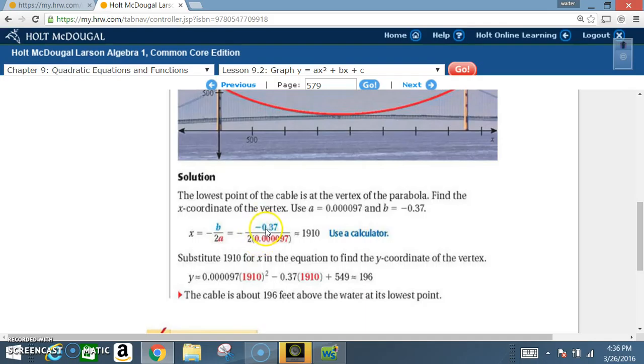Then we apply that. When you divide these two out, you end up with a negative, and then a negative times a negative ends up being a positive. So here we end up with, notice they use a calculator, approximately 1910. Now we substitute 1910 for x in the equation to find the y-coordinate. We plug in and got the y-coordinate being similar to or congruent to about 196. So the cable is about 196 feet above the water at its lowest point.